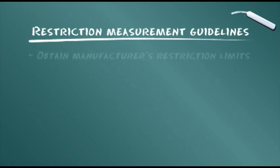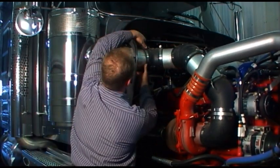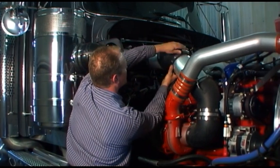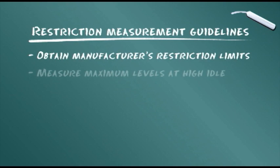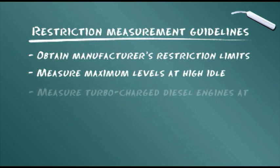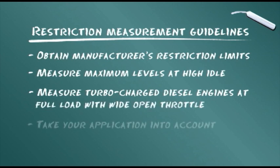Maximum restriction limits are set by engine manufacturers and can be expressed in inches of water vacuum or KPA. If the air cleaner does not have a restriction tap, readings can be taken anywhere in the system between the air cleaner and the engine. Maximum levels are measured at high idle with no load for naturally aspirated and supercharged diesel engines.